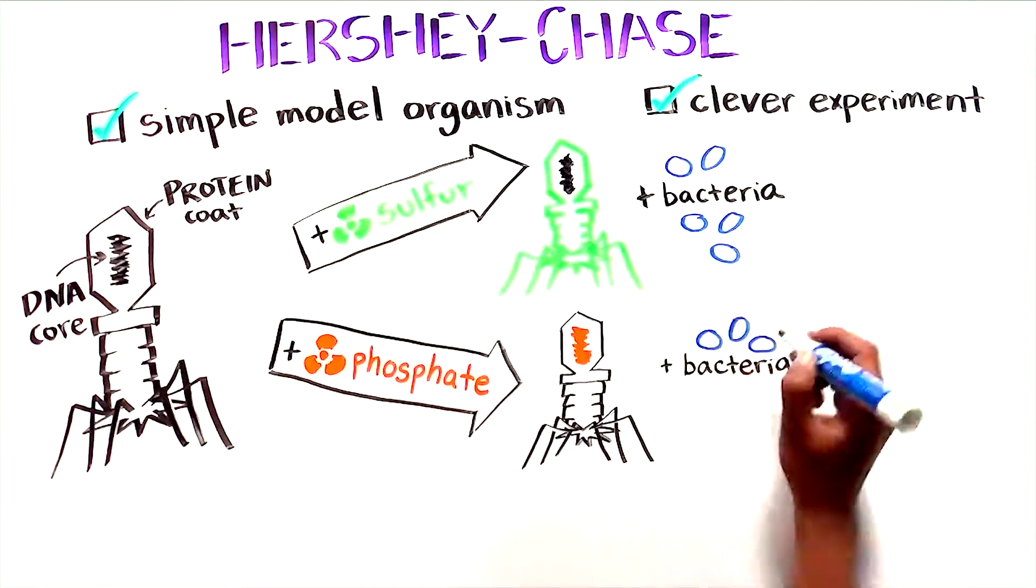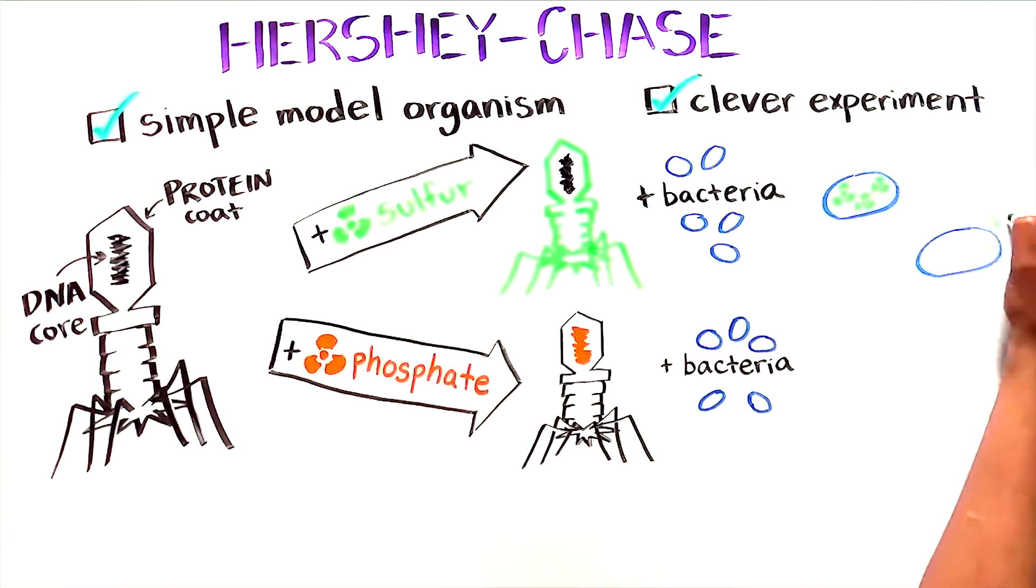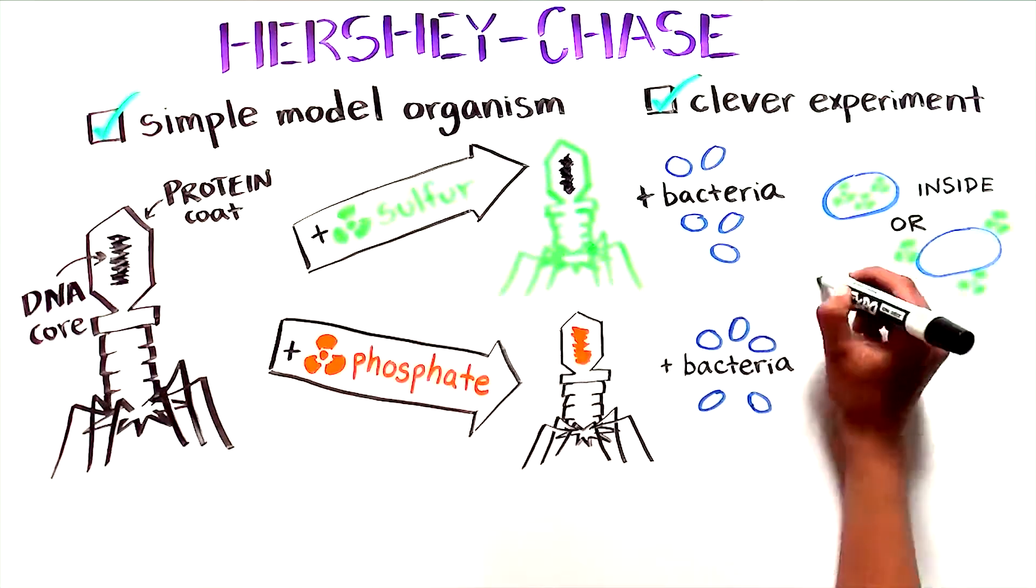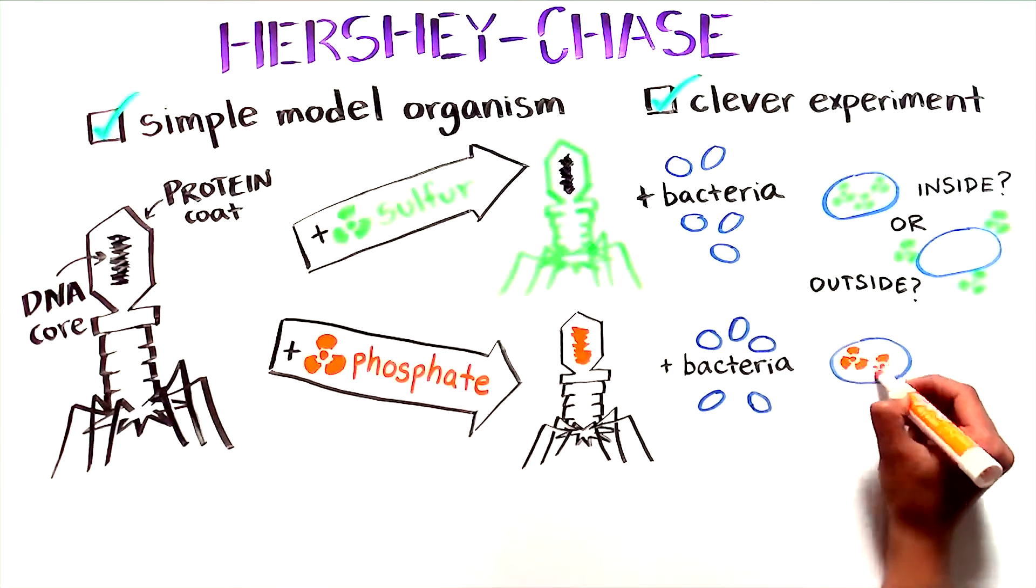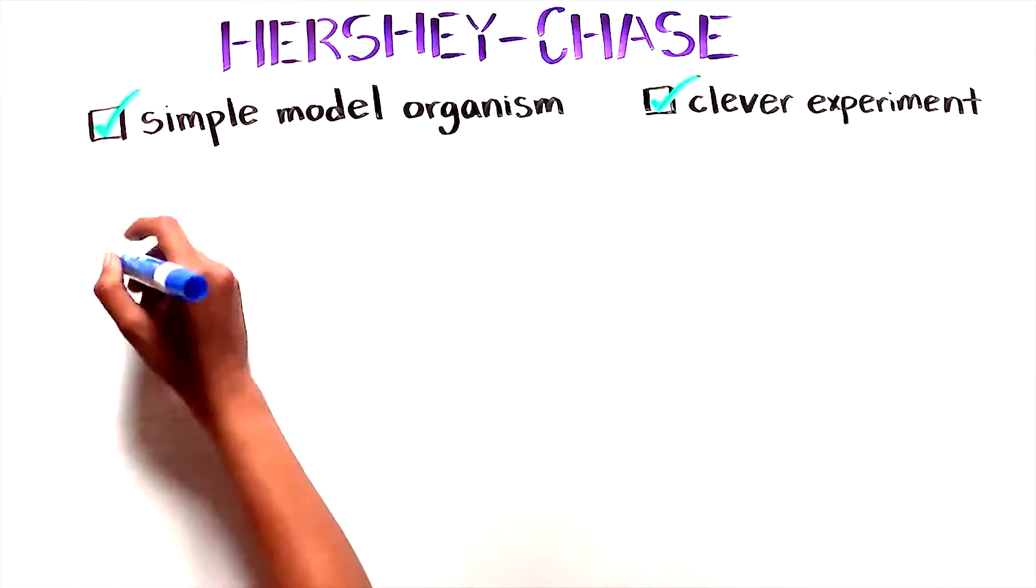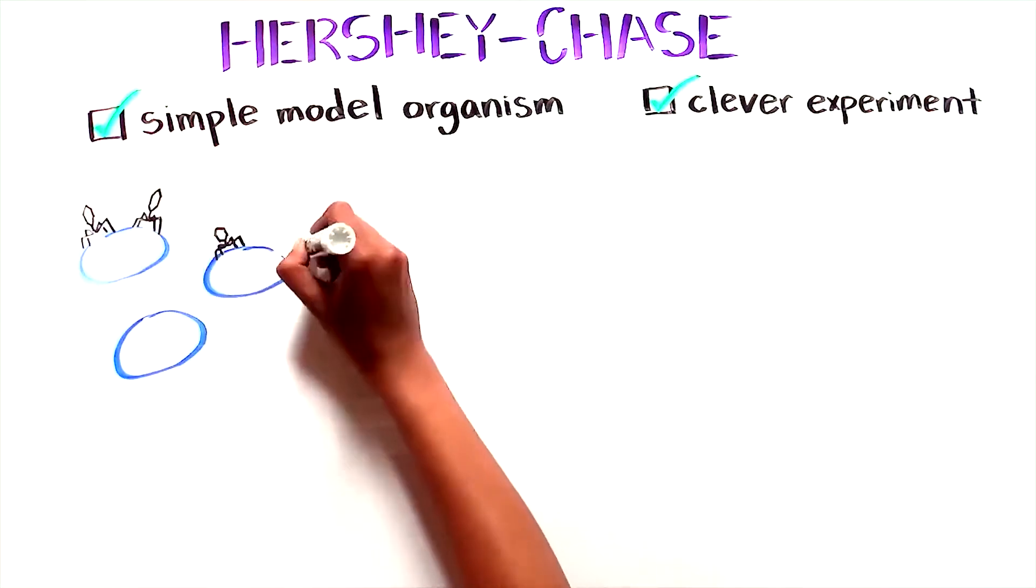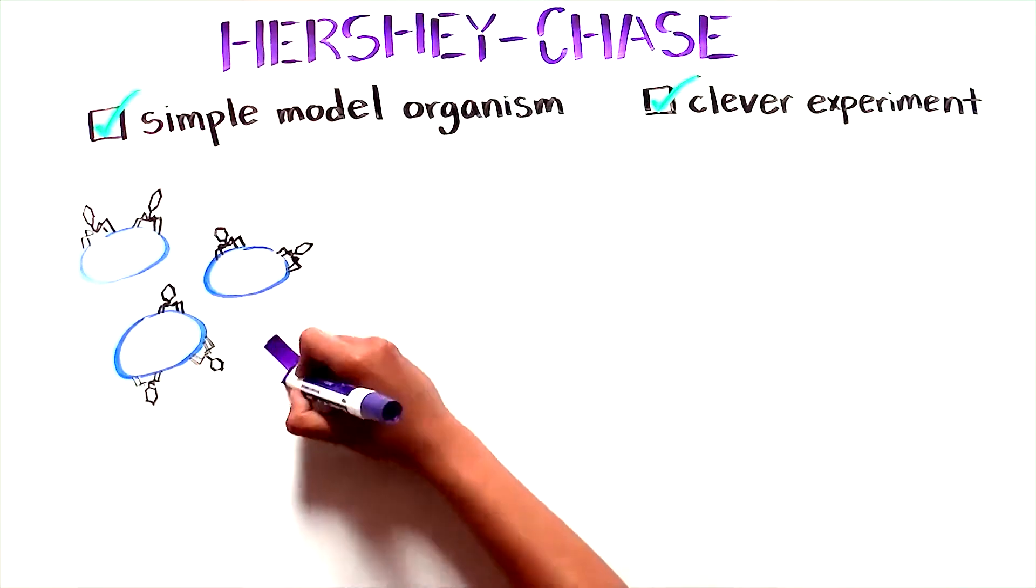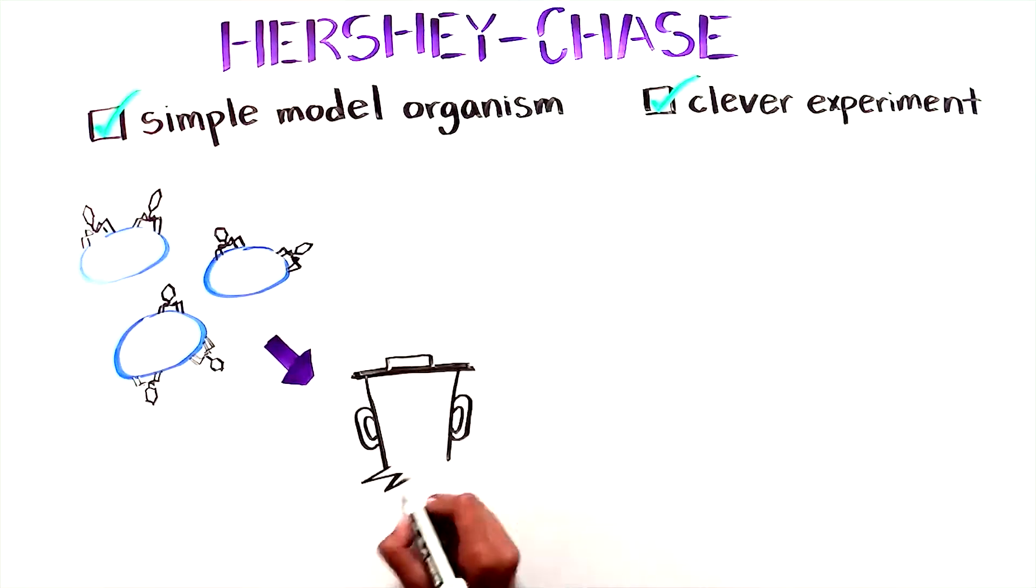After the viruses infected the bacteria, the researchers examined whether the radioactive signal was detected inside the bacteria or left outside. To do so they needed to separate the bacteria from the viruses attached to their outsides, and did so using a Waring blender, similar to that used for making milkshakes.